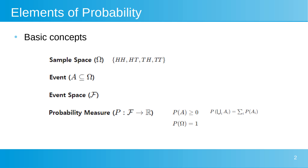The event space script F is the collection of all possible events, forming a sigma-algebra, which includes the sample space, the empty set, and is closed under unions, intersections, and complements. The probability measure P is a function that assigns a probability to each event in script F, satisfying conditions like P(omega) equals 1 and P(A) is non-negative.